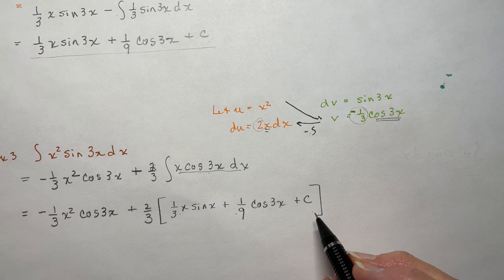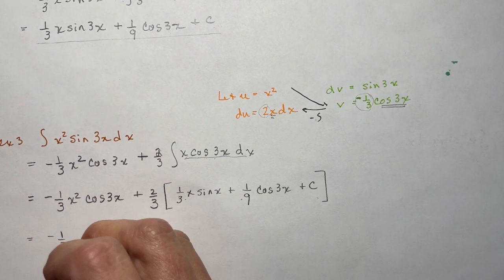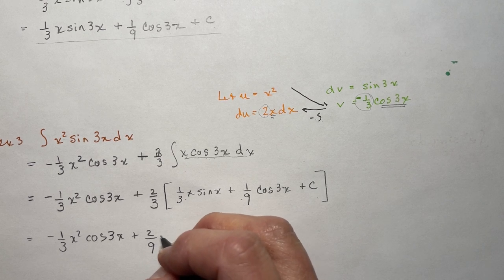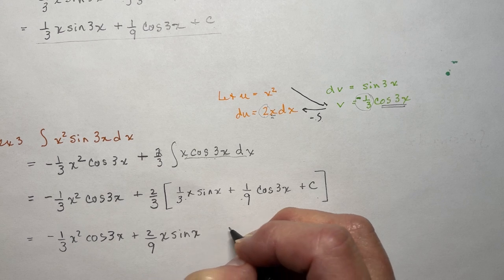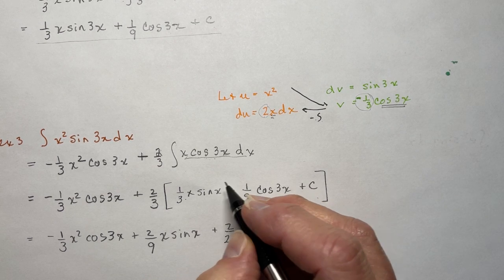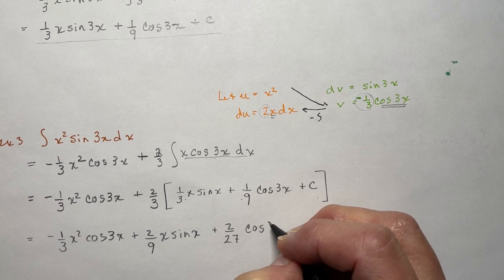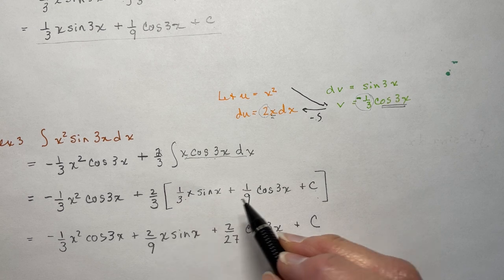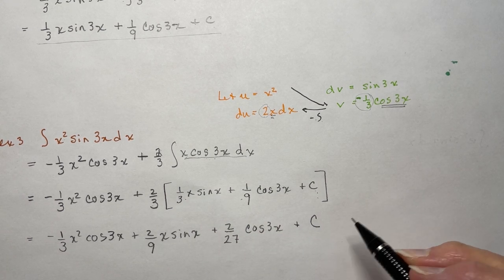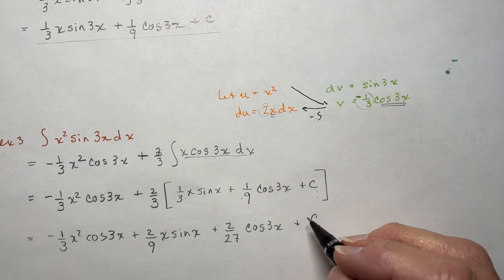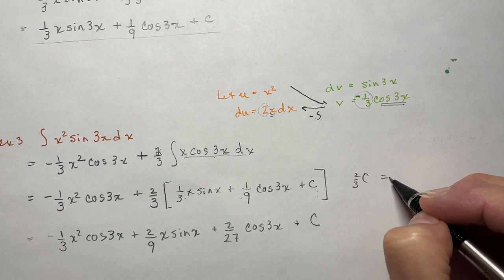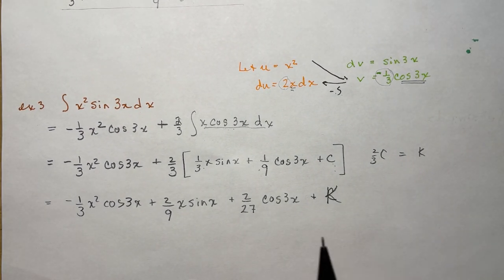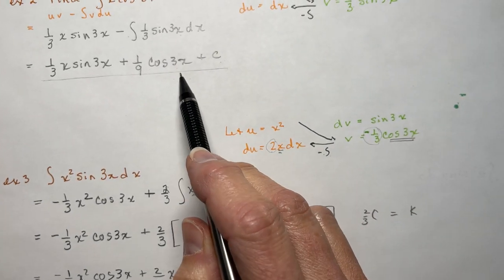And now I have to multiply each of these by two-thirds, and we're going to be all done. So: minus (1/3)x²·cos(3x) plus (2/9)x·sin(3x) plus (2/27)cos(3x). A ninth times two-thirds — multiply tops and bottoms. We could just call the constant k, since it's really two-thirds times c.